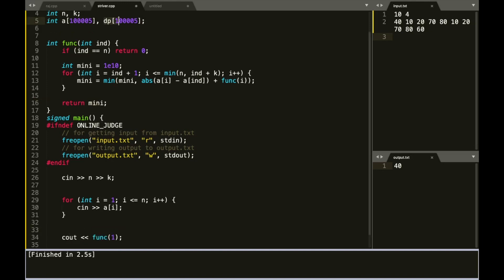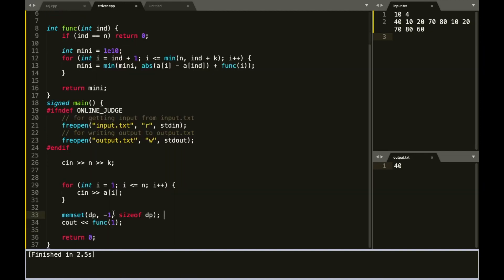What you'll do is you will initially take this dp array of the same size as the array and fill it up with minus 1. We can easily fill it up with minus 1 using memset.